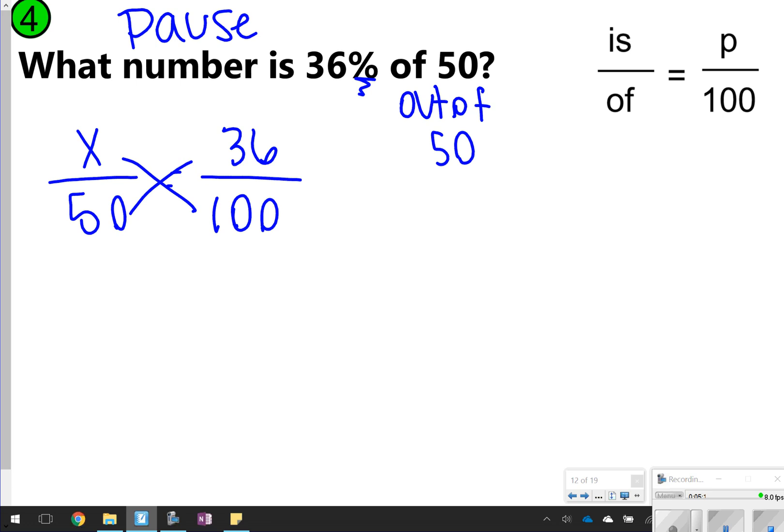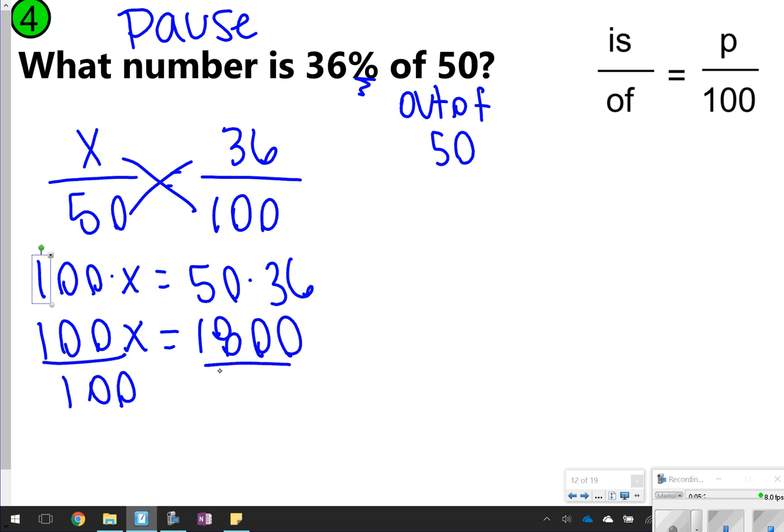I'm going to cross multiply 100 times x and 50 times 36. 100 times x is 100x, and 50 times 36 is 1800. And then I'm going to divide both sides by 100. x is equal to 18. Okay, how'd you do?